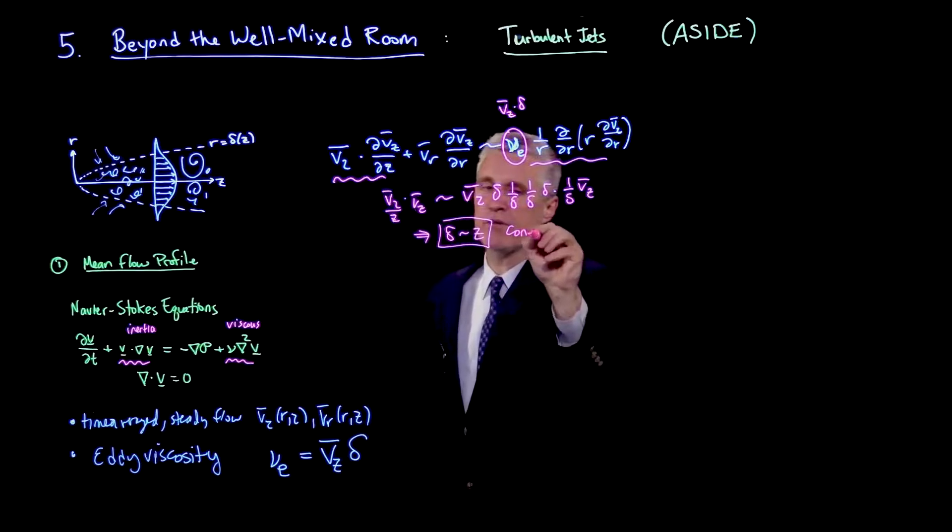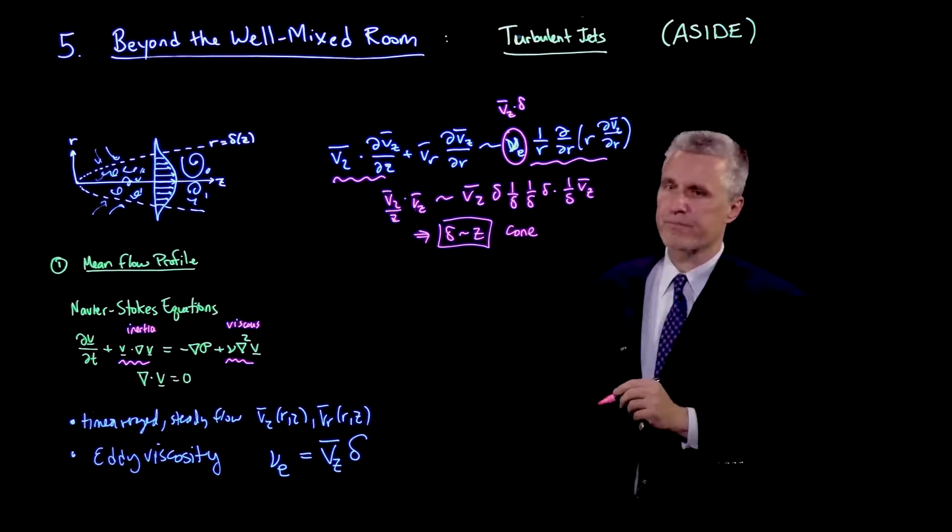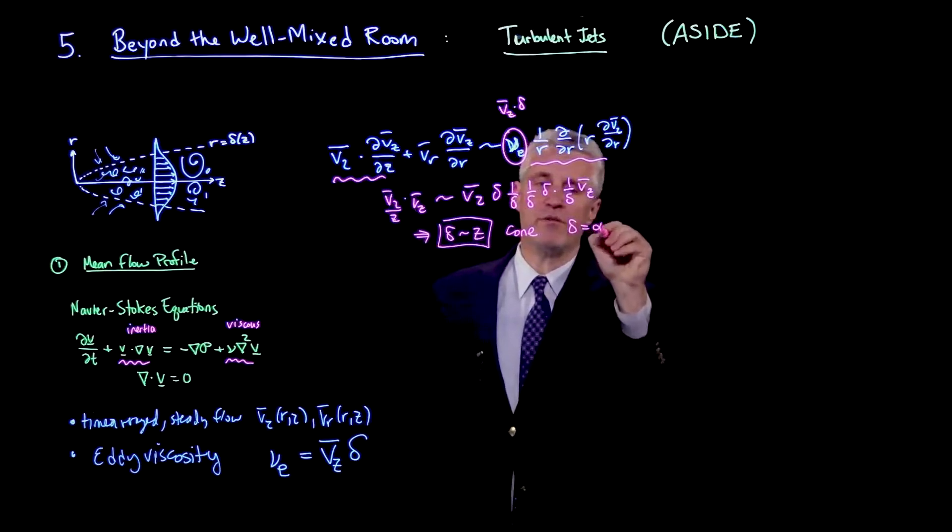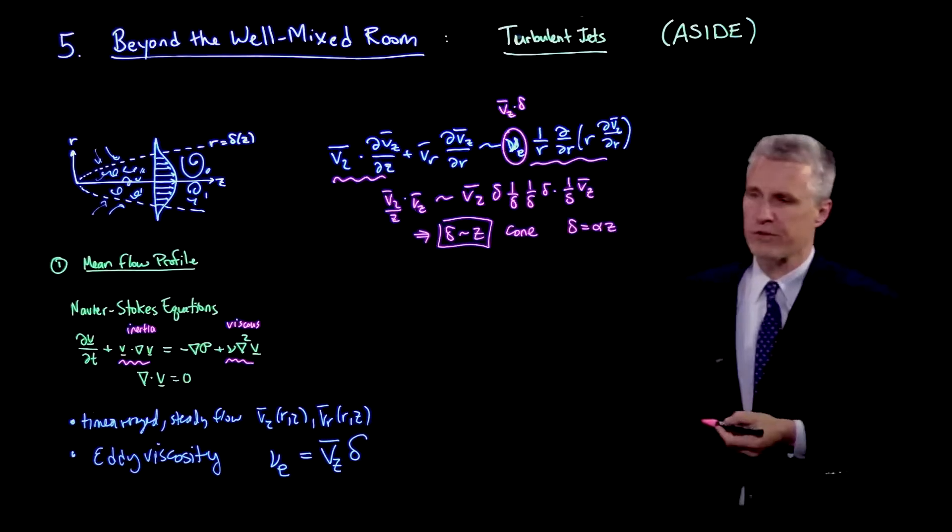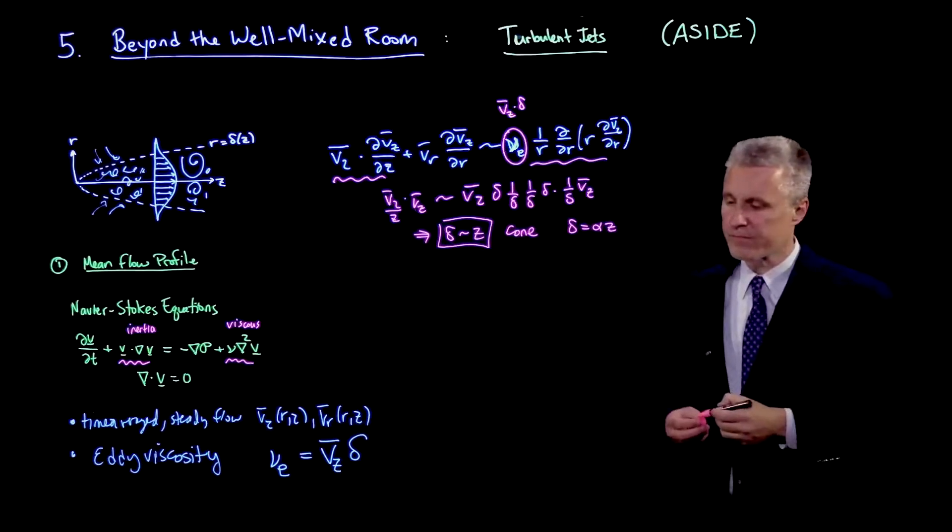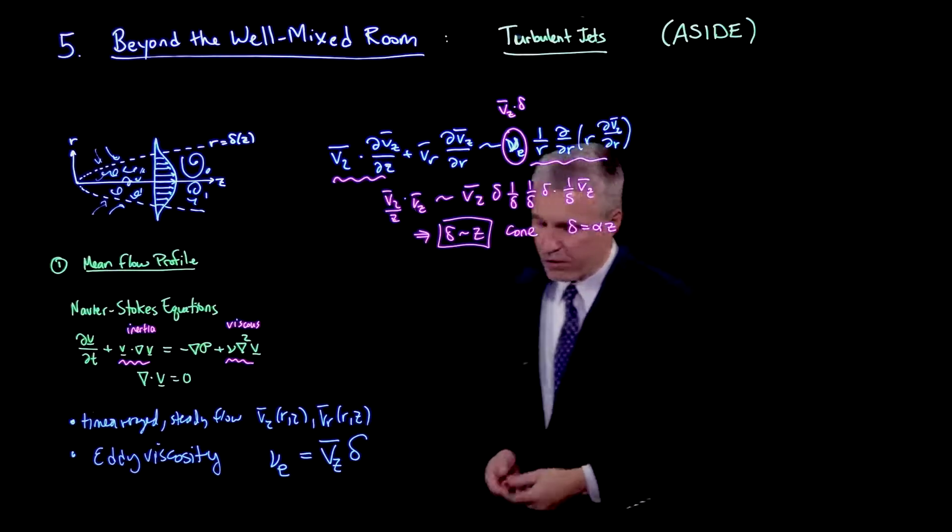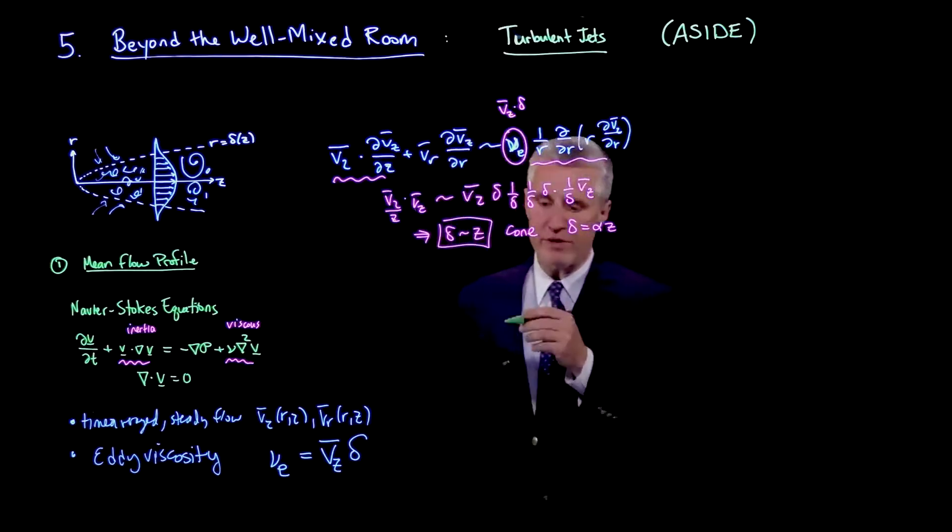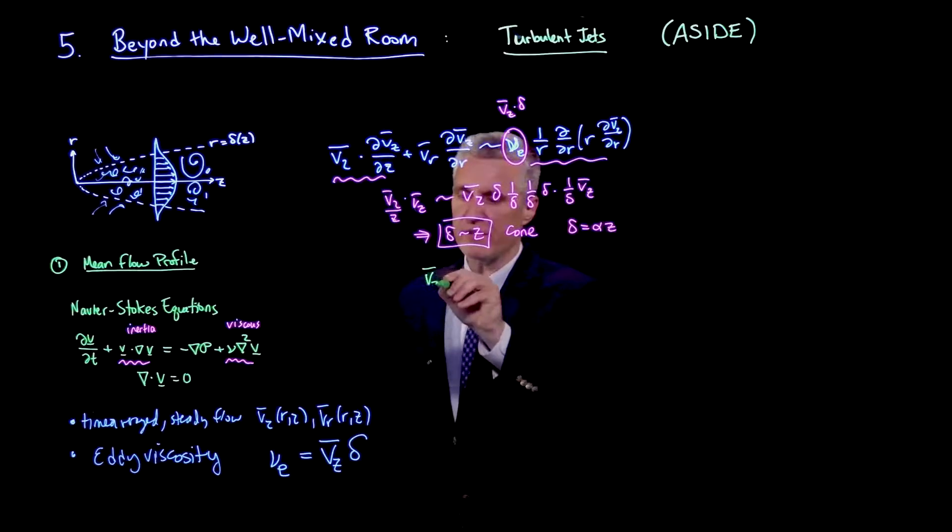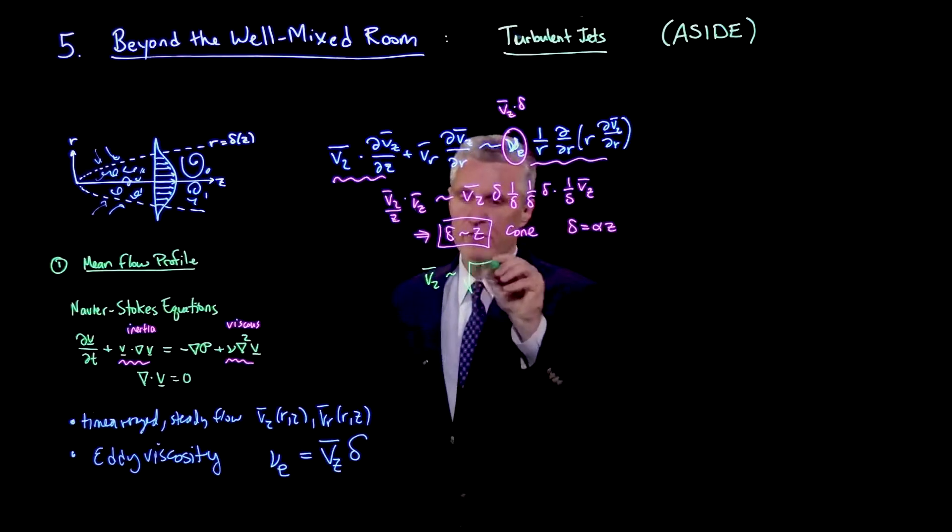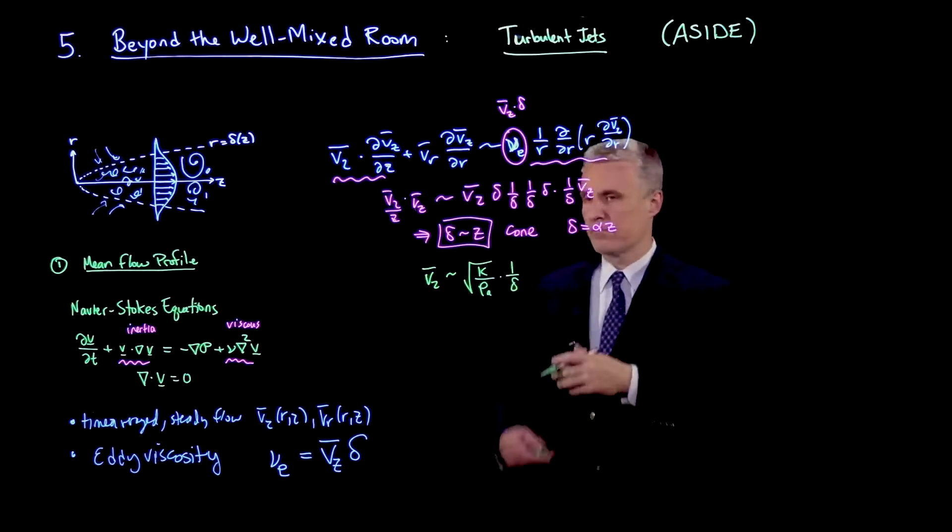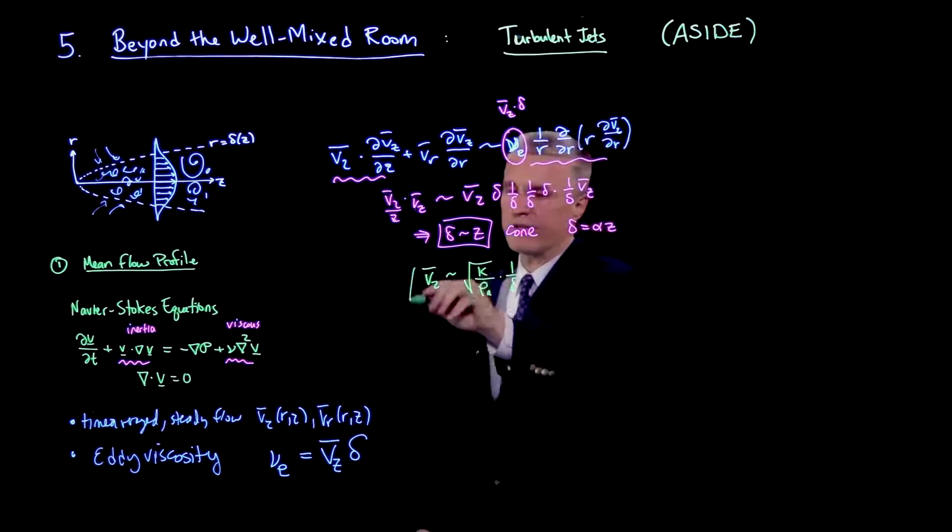So in other words, we have a conical shape. OK, so the boundary layer thickness is a constant times z. And what we write is that delta is equal to alpha z, specifically. And we define the turbulent entrainment coefficient alpha that way. And then once we've done that, we've already shown that from the momentum flux, that vz scales as the square root of k over rho times 1 over delta. So this basically now gives me the scaling of the problem.